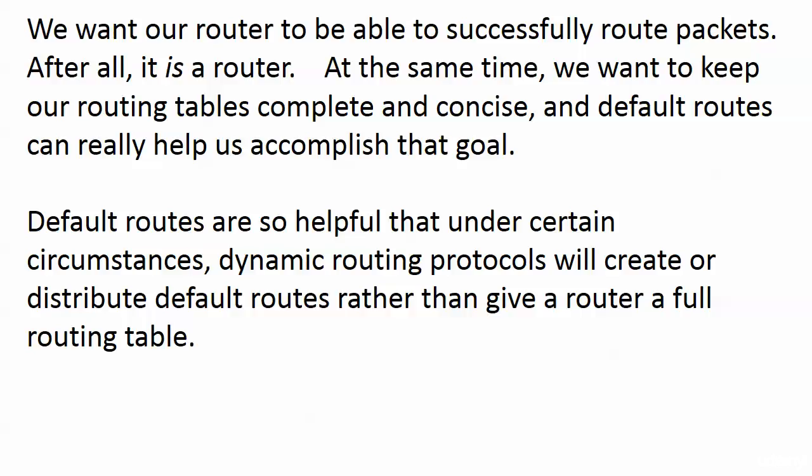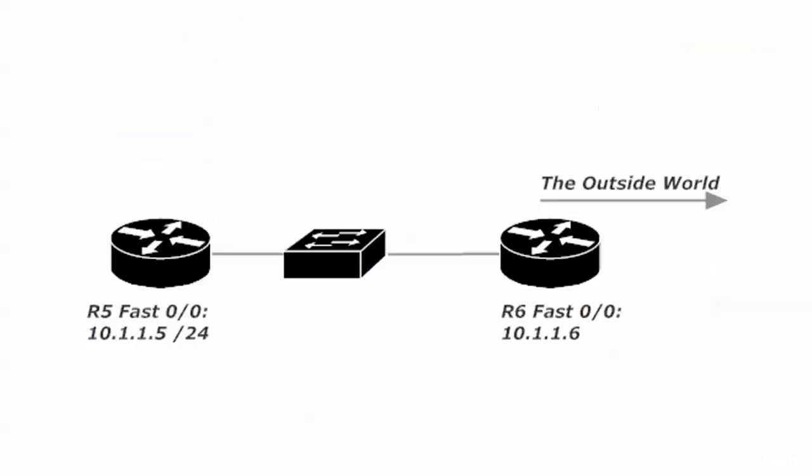Default routes are so helpful under certain circumstances that our dynamic routing protocols — RIP, EIGRP, OSPF — will either allow the creation of a default route or the distribution of a default route under certain circumstances, rather than give a router a full routing table. That's one of those things that sounds pretty vague when you read about it or hear me talk about it, so let's have an illustration here that will really help.